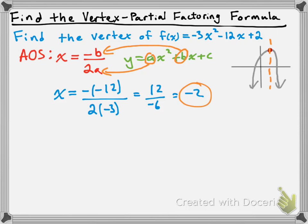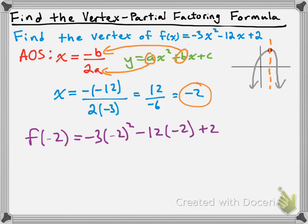Since we know the x-value of our vertex is negative 2, it's easy to find the y-value — all we need to do is substitute that x-value back into our initial quadratic equation. So we're looking for f(-2), the y-value when x equals negative 2. We replace every x in our quadratic with negative 2, giving us: -3 times (-2)² minus 12 times (-2) plus 2. From here, all we need to do is simplify this expression.